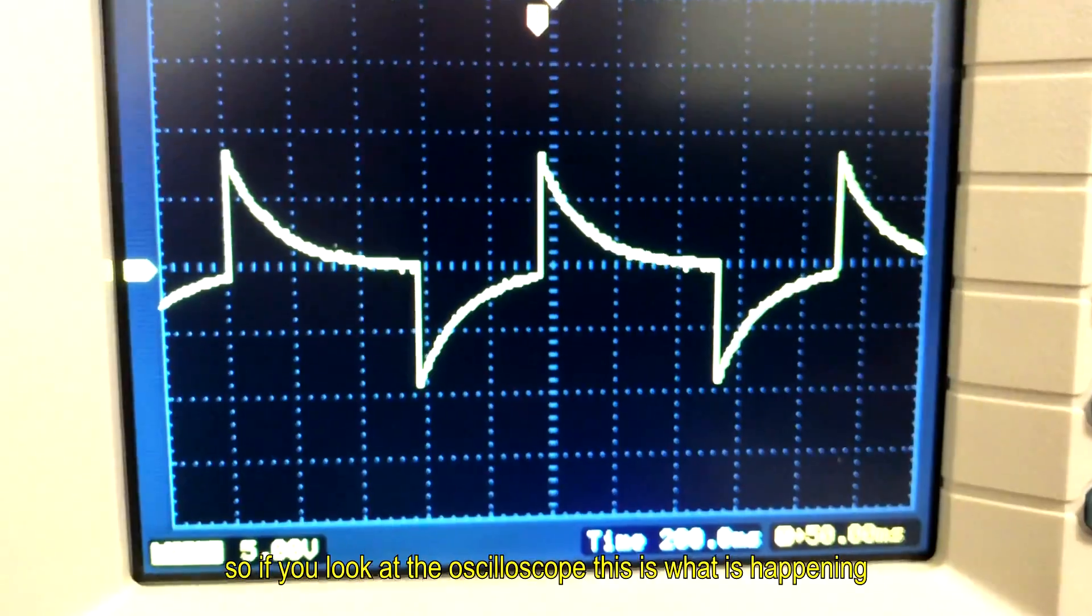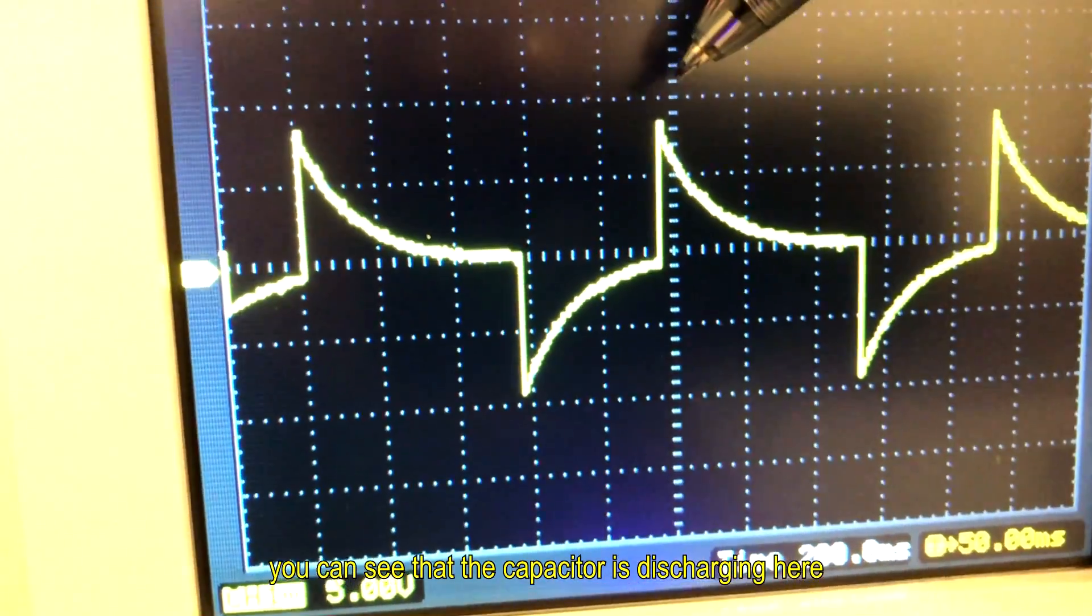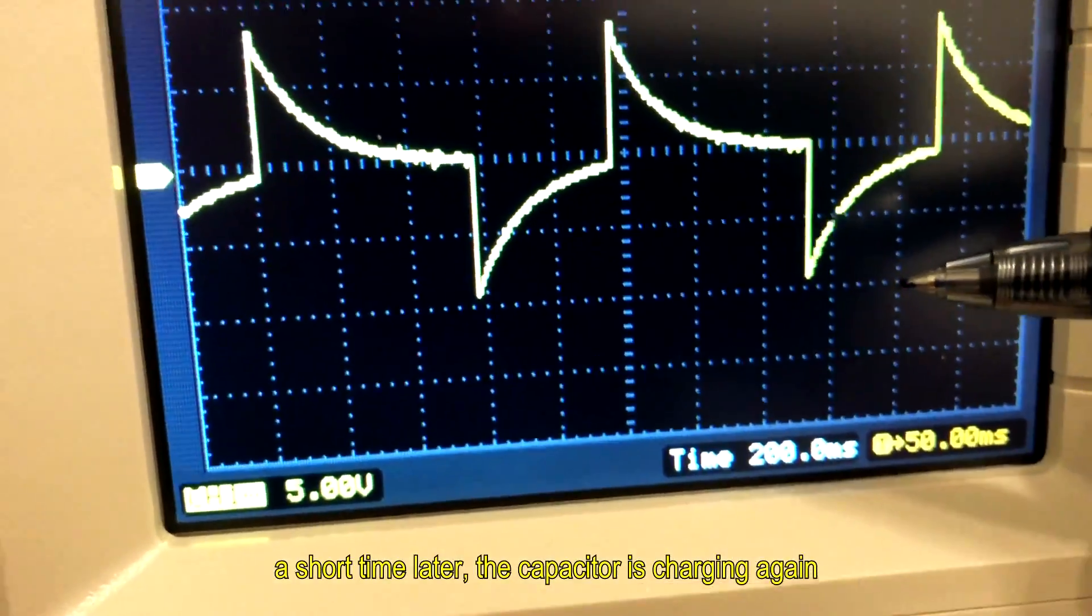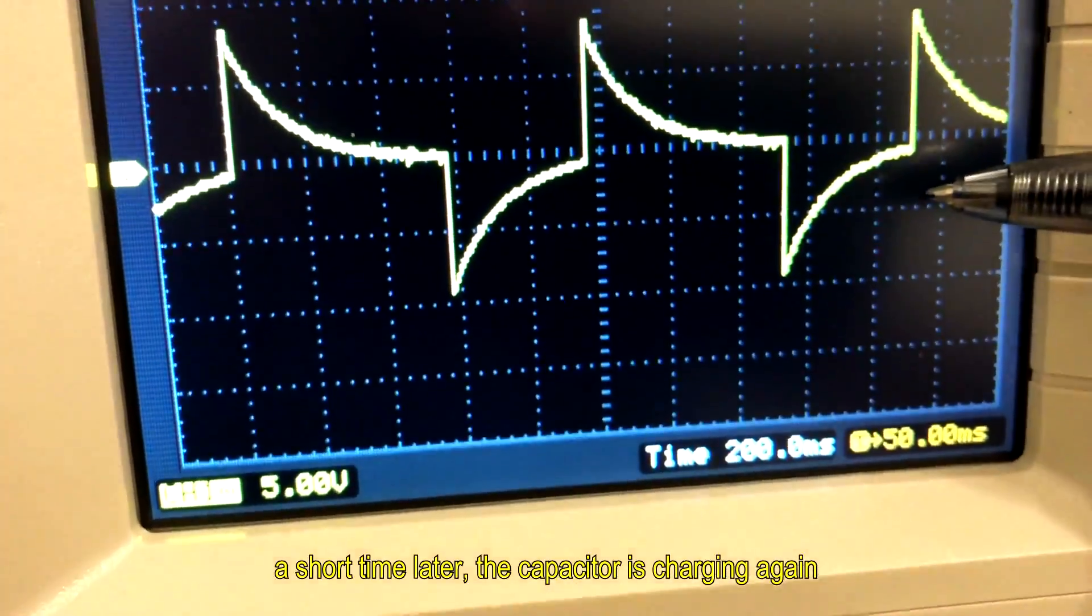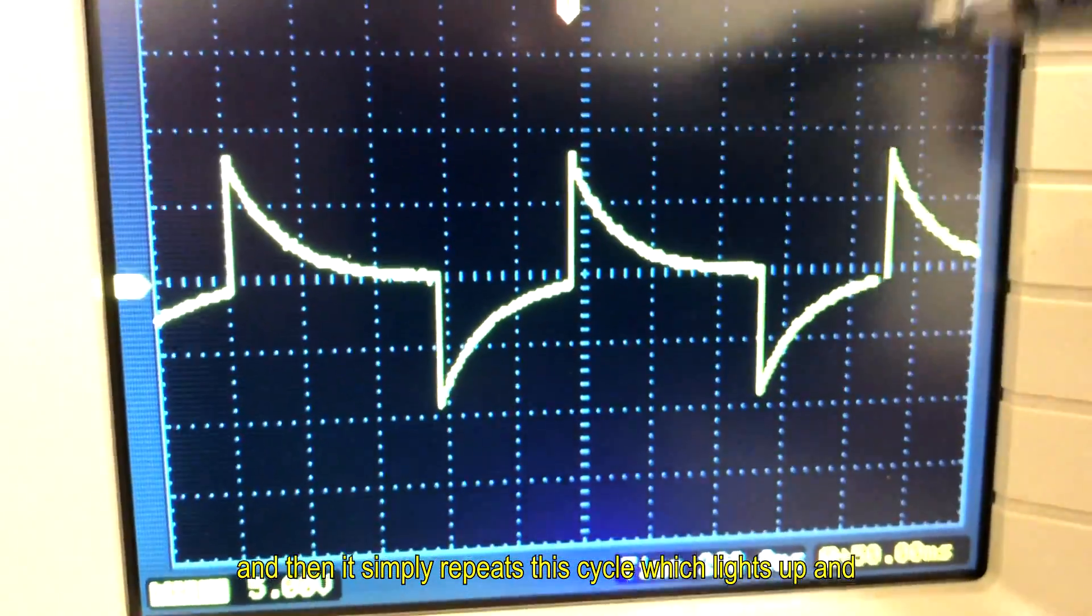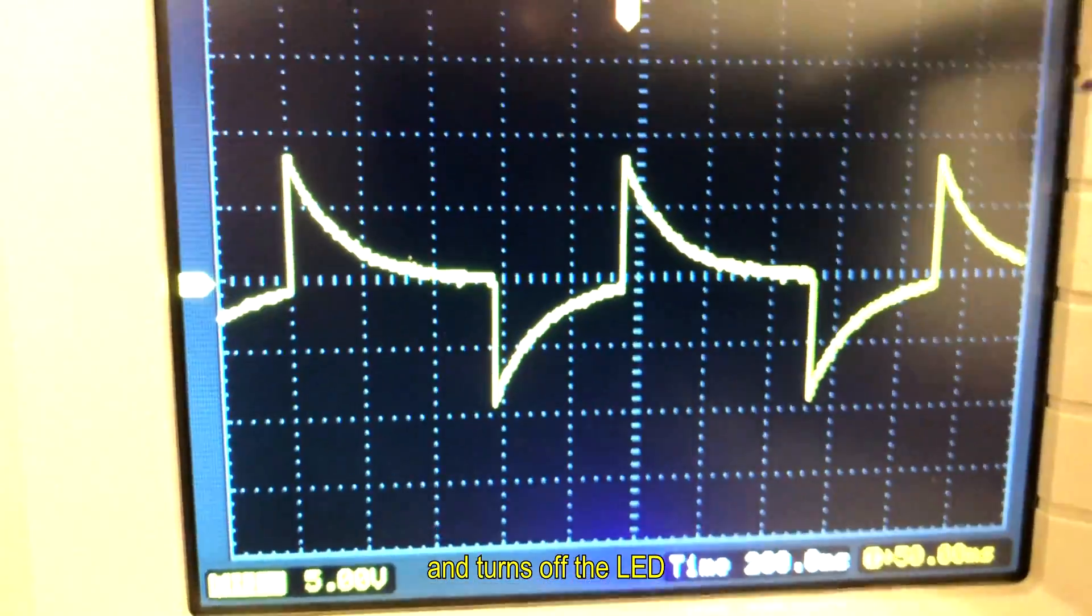The positive and negative inputs are trying to equalize while the capacitor is charging and discharging. So if you look at the oscilloscope, this is what is happening. You can see that the capacitor is discharging here. A short time later, the capacitor is charging again. And it simply just repeats the cycle which lights up and turns off the LED.